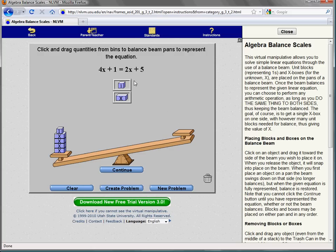A 2x means I need 2 of the x blocks so I drag those over with my mouse. A plus 5 means I need 5 ones so I drag those over with my mouse.